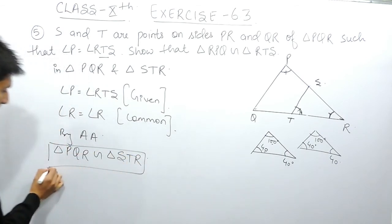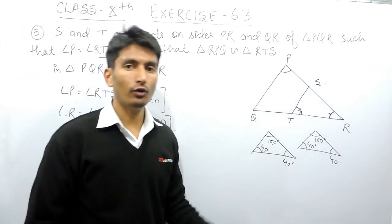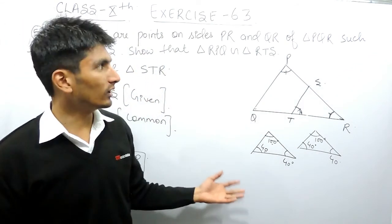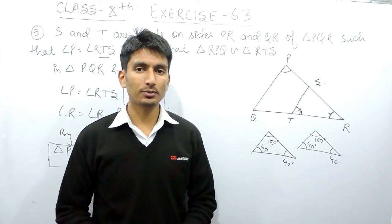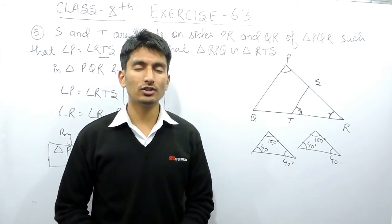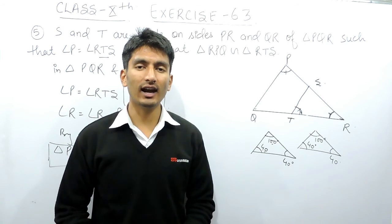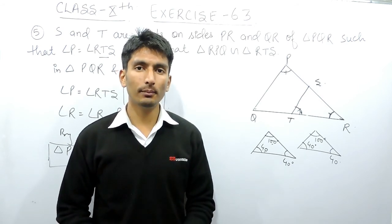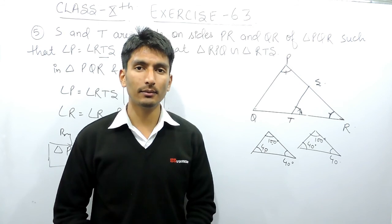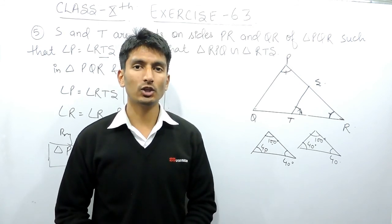By the angle-angle (AA) property, I can conclude that triangle PQR is similar to triangle STR. This is the proof. This is how you can solve this particular question. If you like this, please subscribe to our channel. If you have any problem regarding maths, you can directly contact us — the phone number, email address, and WhatsApp number are given below in the description. Thank you.